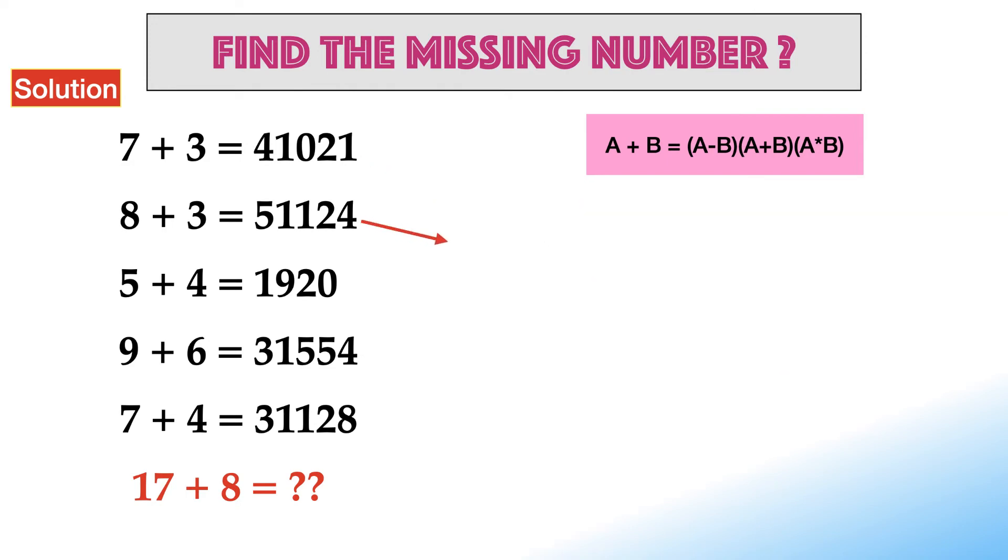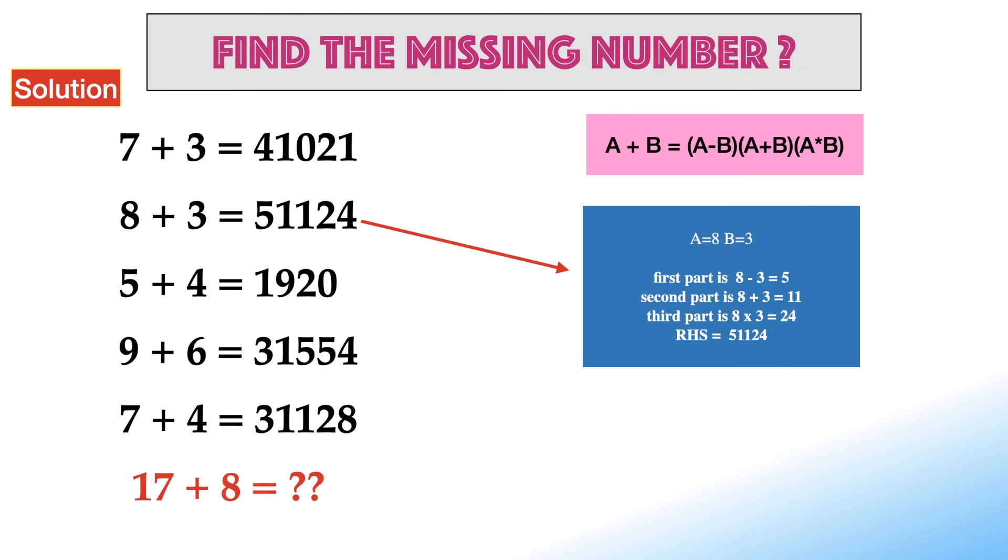In the second equation, A is equal to 8, B is equal to 3. According to the logic, first part is 8 minus 3 equals 5. Second part is 8 plus 3 equals 11. Third part is 8 times 3 which is equal to 24. Hence, RHS is 51124.